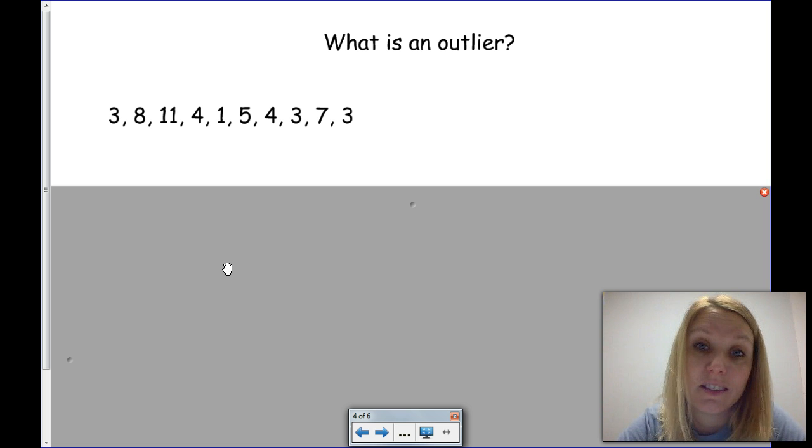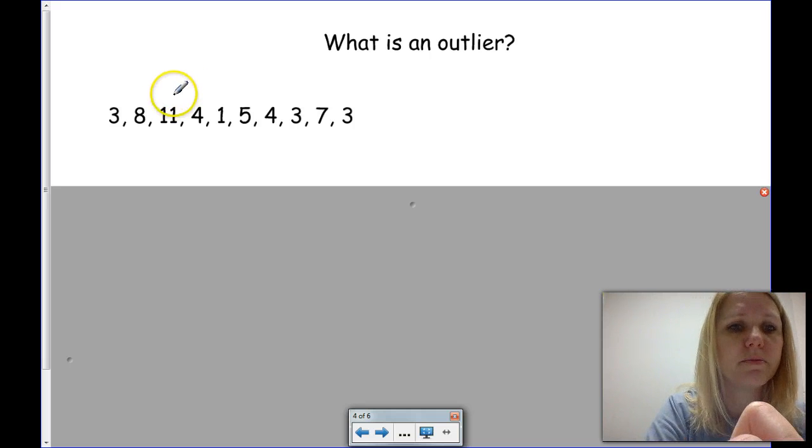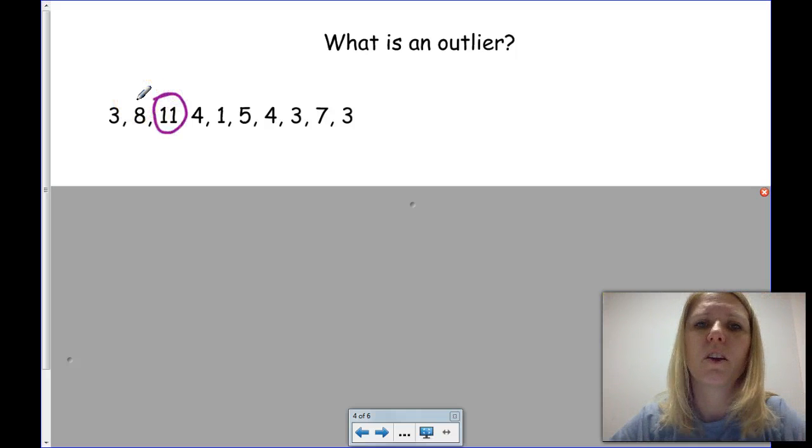What exactly is an outlier? Well, it's a number that is kind of an oddball. It doesn't seem to belong with the rest because it's either so much larger than the rest of the numbers or much smaller than the rest of the numbers. If you look at this list of numbers here on the screen, you'll notice that the number 11 seems to be larger than the other ones. So, I would guess that might be an outlier.